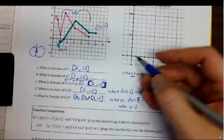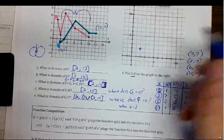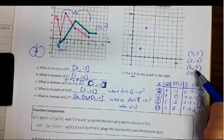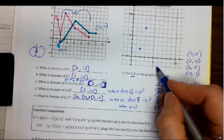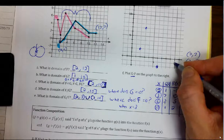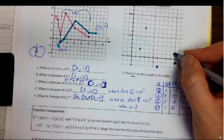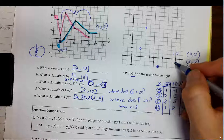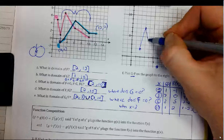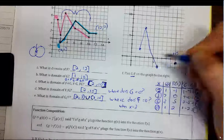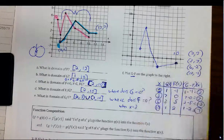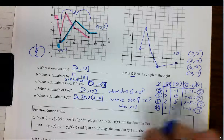I can plot all these points. So 2, 2 is right there; 3, 7 is right here; 6, negative 2 — we're almost out of room — is right there; and 10, negative 1 is right there. And then I can connect these points to get the final graph of g minus f.